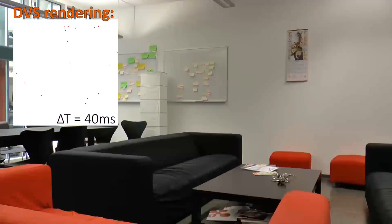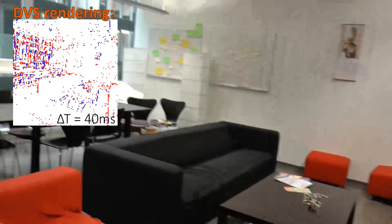When we keep the event camera steady, only motion in the scene generates events. Instead, moving the event camera reveals the gradients in the scene.